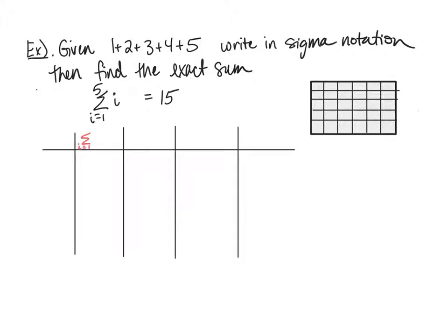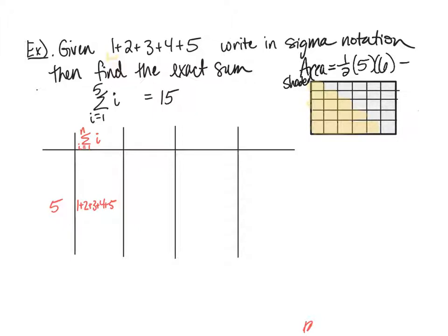Suppose we want to do this in general: i equals 1 to n, adding up the first n integers. Looking at a table for n equals 5: 1 plus 2 plus 3 plus 4 plus 5 equals 15. From a picture, adding just the first term shades the top-left of a box; adding the first two terms shades two rows; and so on through all 5 rows. The shaded area is exactly one half the area of the rectangle, which in this case is 5 rows times 6 columns, giving 15.